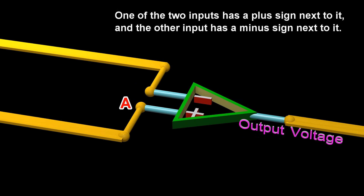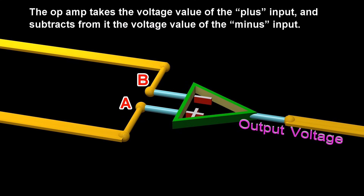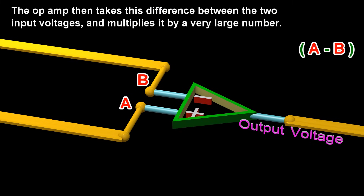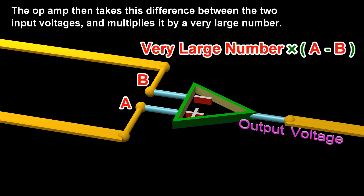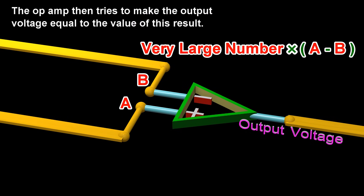One of the two inputs has a plus sign next to it, and the other input has a minus sign next to it. The op-amp takes the voltage value of the plus input, and subtracts from it the voltage value of the minus input. The op-amp then takes this difference between the two input voltages and multiplies it by a very large number. The op-amp then tries to make the output voltage equal to the value of this result.